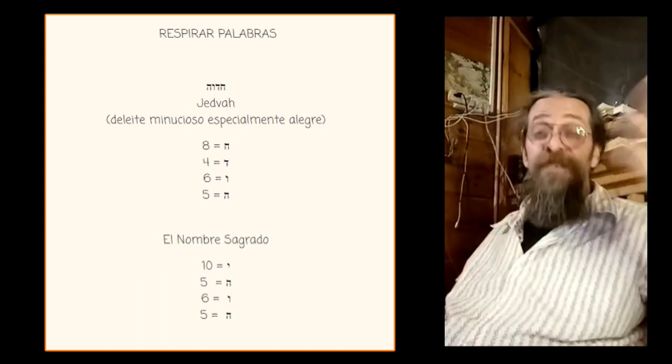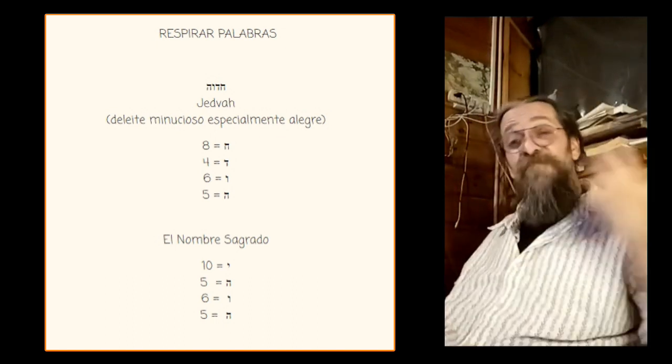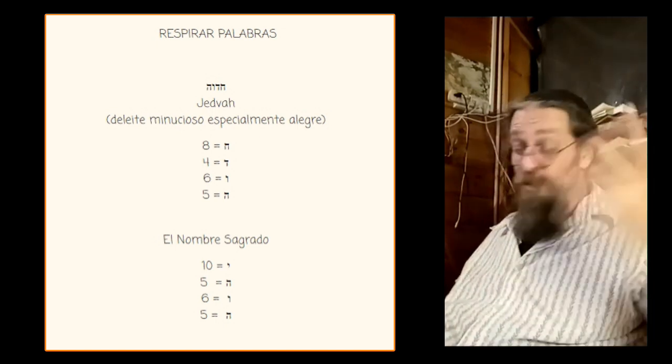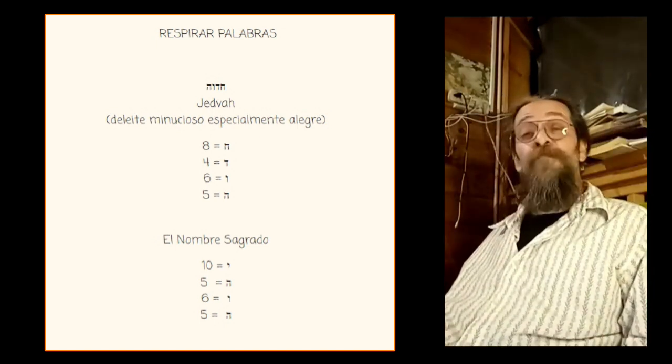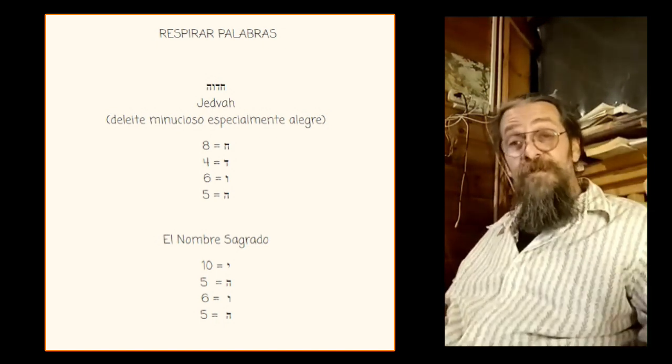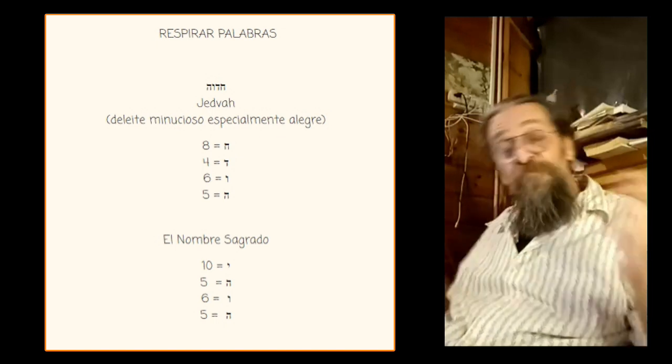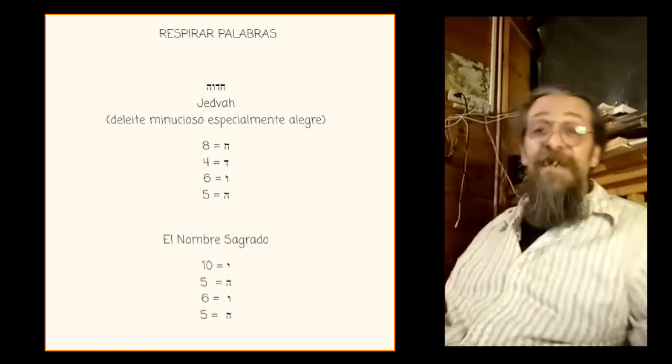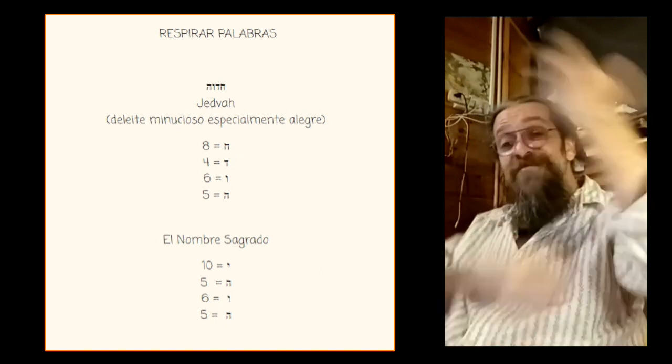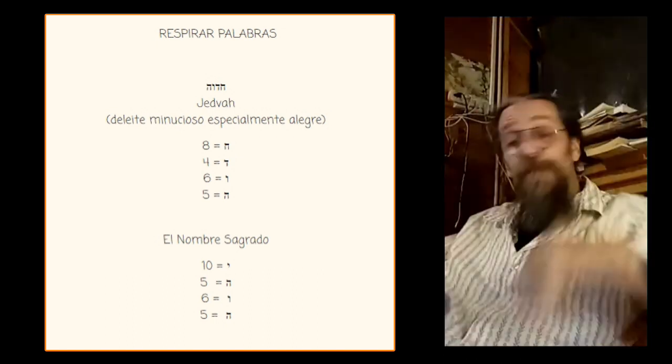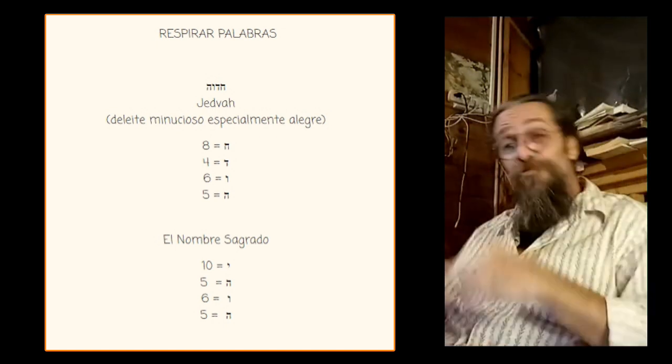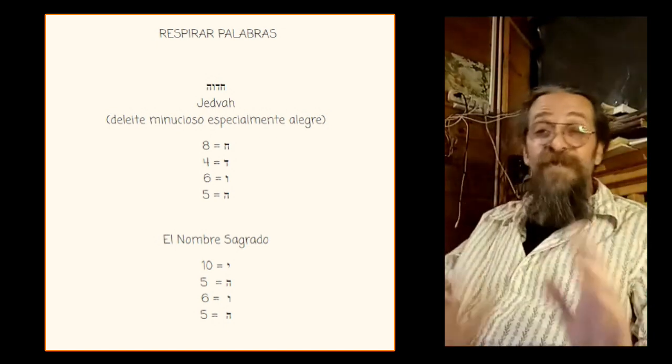Haday nafshí es alégrate alma mía, como dice Rav Shechet en un pasaje del Talmud, cuando se alegra de que su alma tiene Torah, y teniendo Torah tiene todo. Entonces dice, alégrate alma mía, porque tienes Torah y en la Torah tienes que dar las vueltas, todo lo que haga falta, y dándola vueltas, y entendiendo, y hurgando, y buscando, todo lo vas a encontrar en ella.